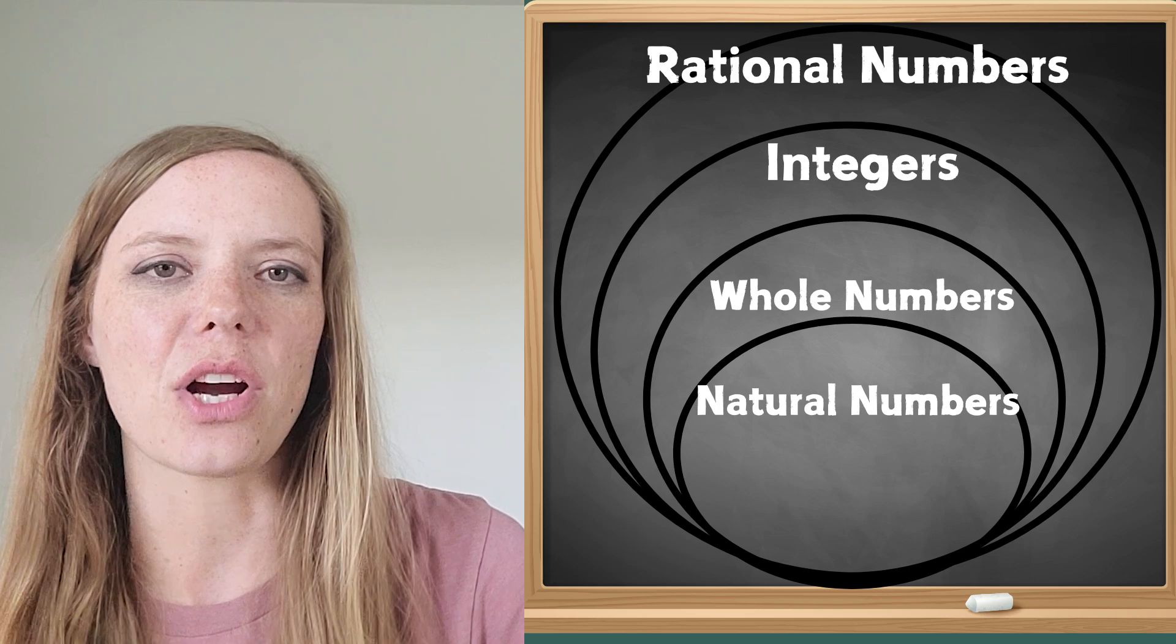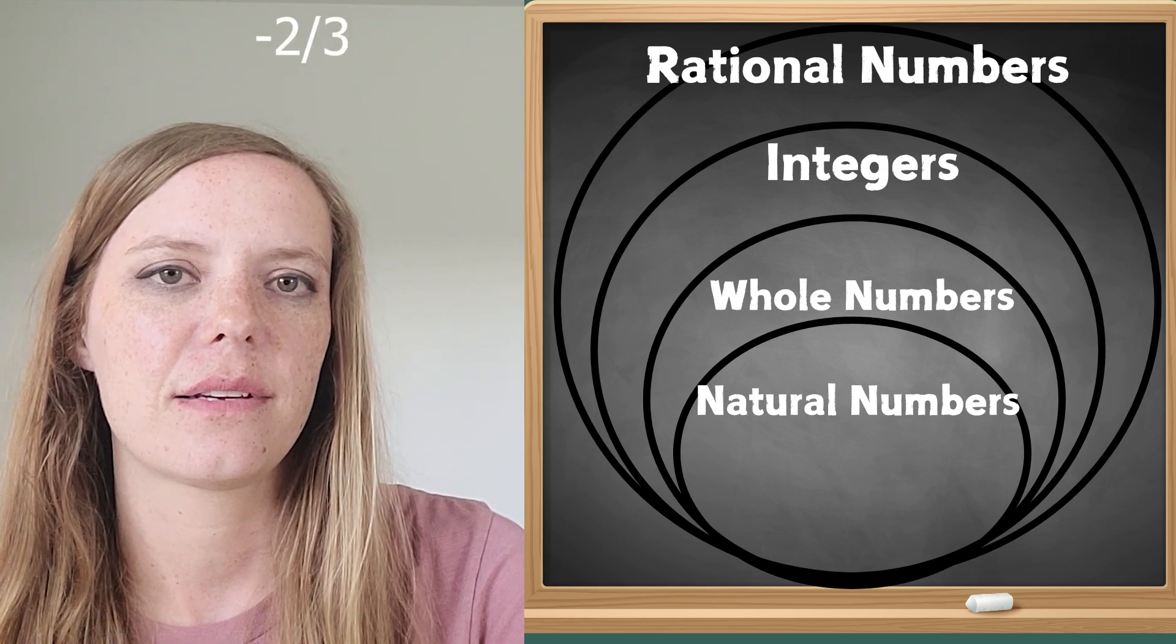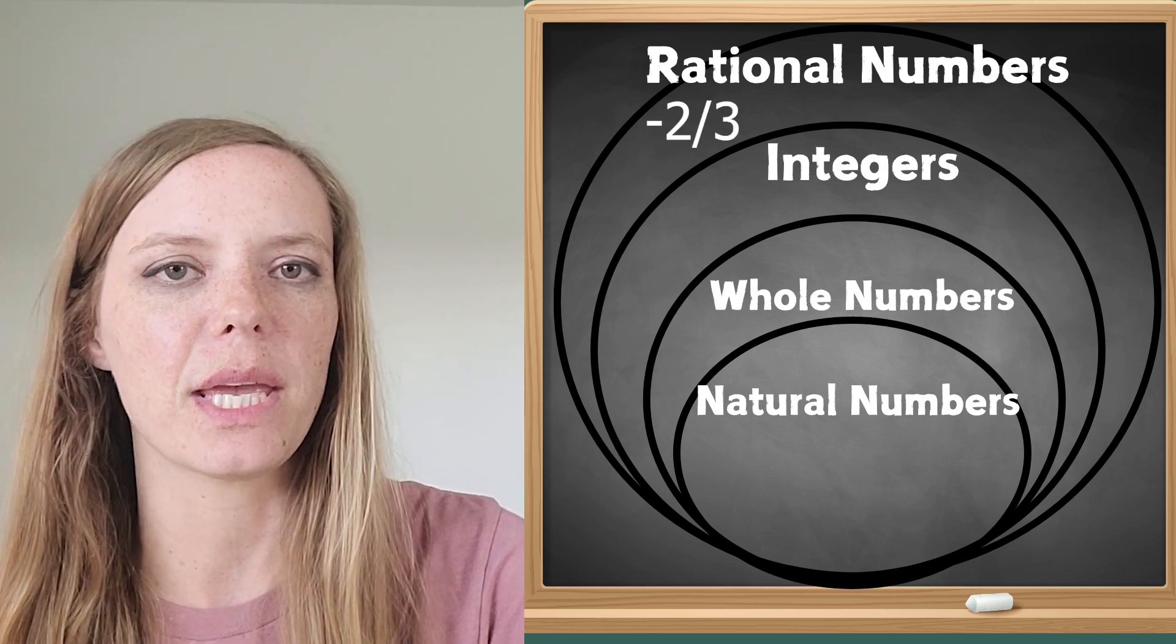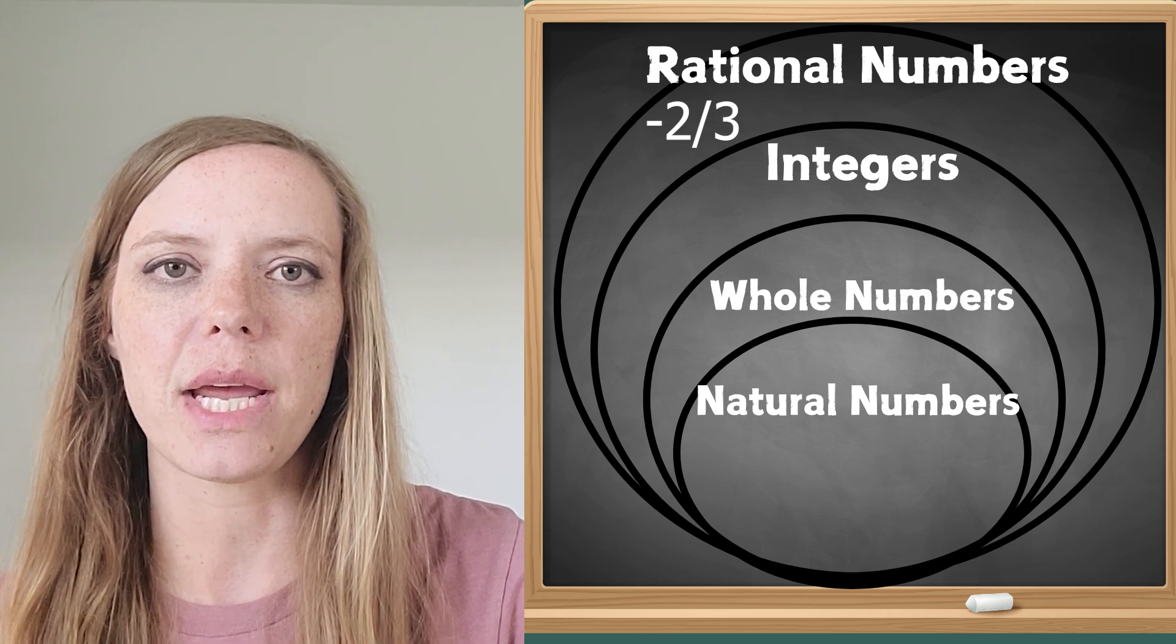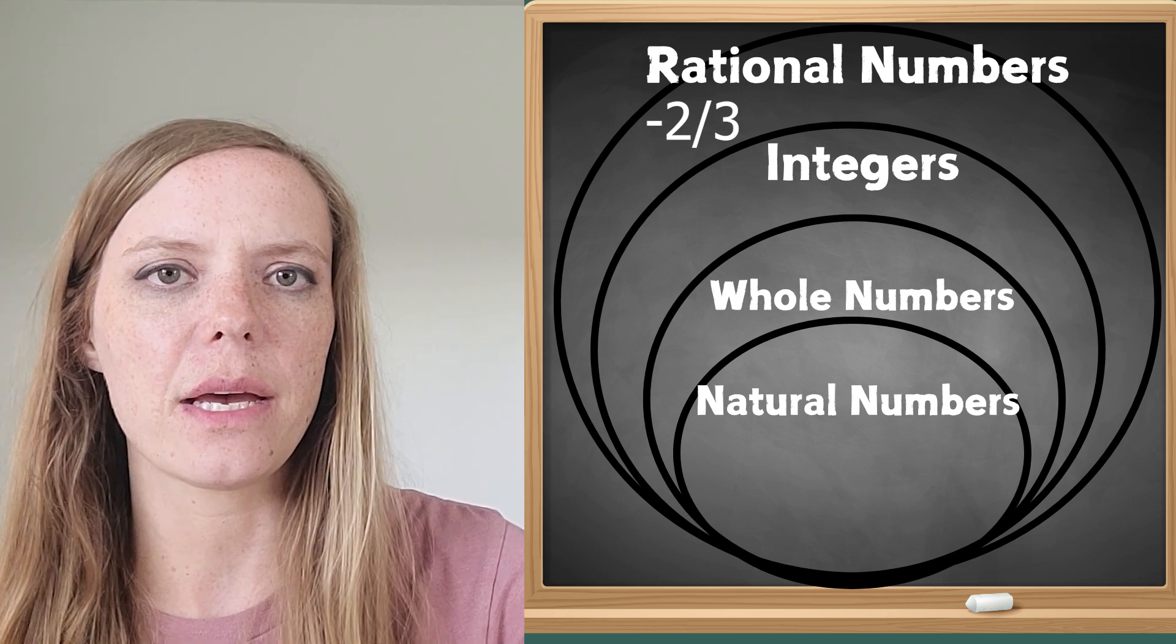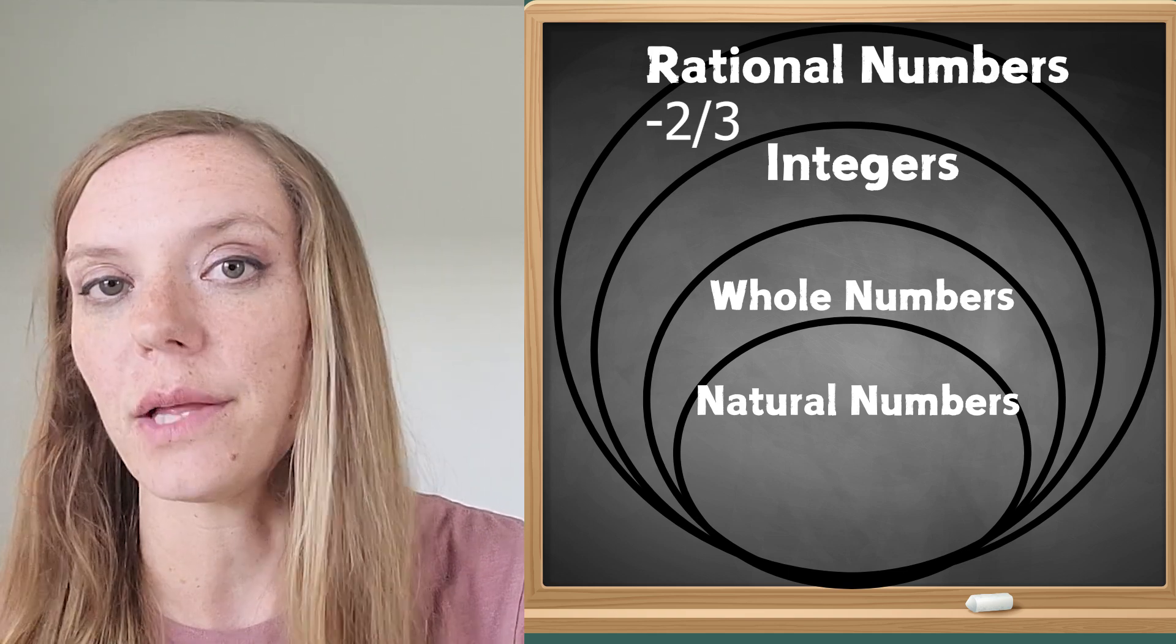Okay so let's start. What about negative two thirds? Okay you got it. Rational number is the most specific we can get with that. It's written in fraction form. It's also negative and we can't call it an integer because that would be whole numbers and their opposite, so we can't call it that.